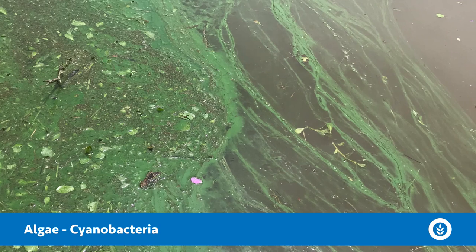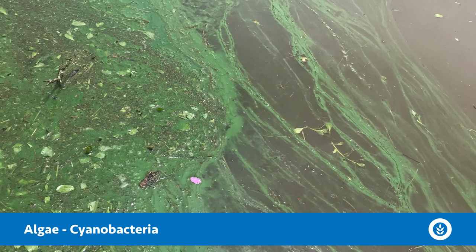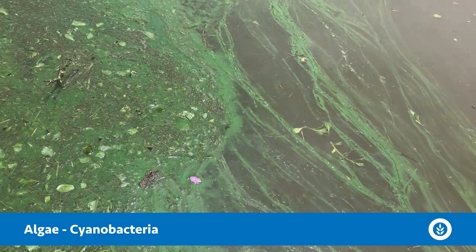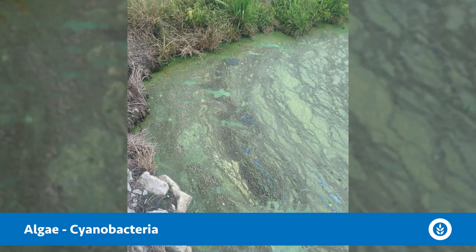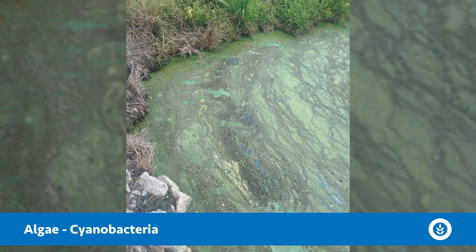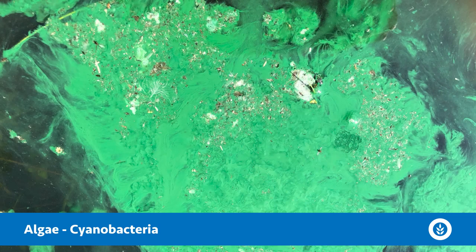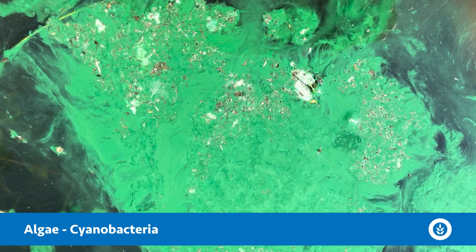Another big culprit to these surface scums are different algal types, and there are many different types of algae that can form that surface scum. A common one is blue-green algae or cyanobacteria. They have gas vesicles — they can adjust their buoyancy and pop up and sit on the top of the surface, sitting on the surface scum in the water body.